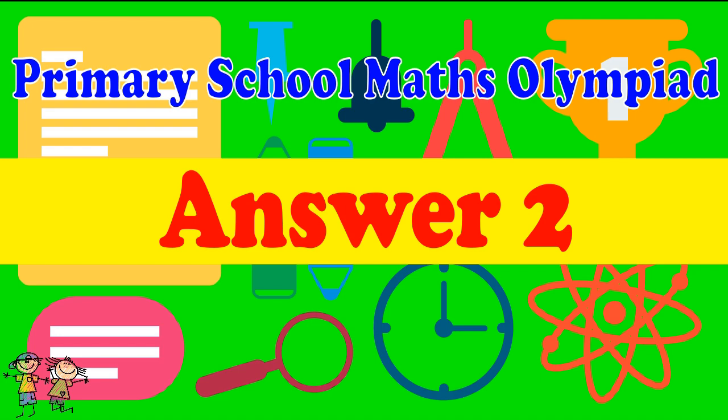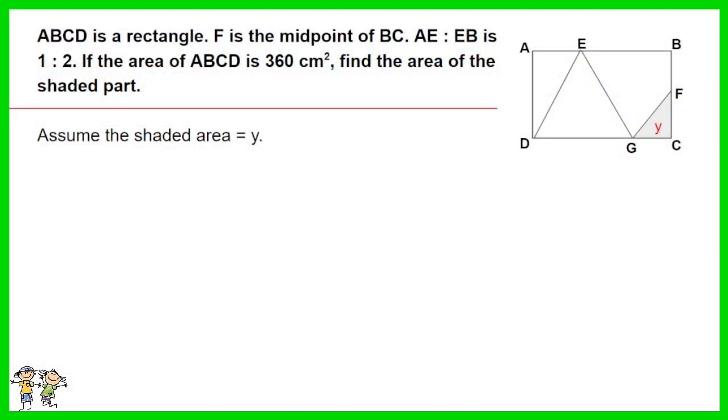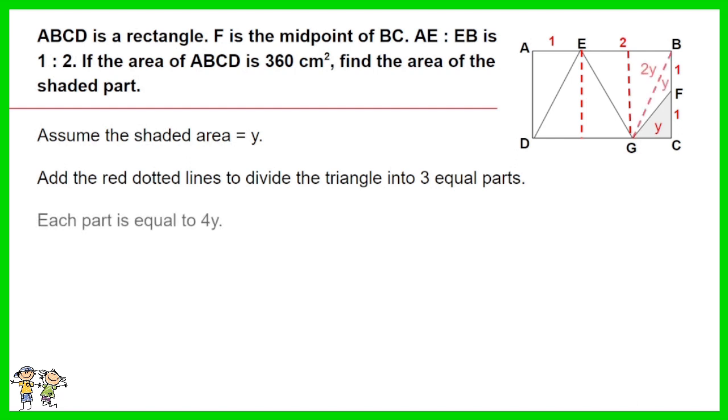Answer for question 2. Assume the shaded area equals Y. Add the red dotted lines to divide the triangle into 3 equal parts. Each part is equal to 4Y. Thus, the shaded area Y equals 360 divided by 3, then divided by 4. The answer is 30 cm squared.